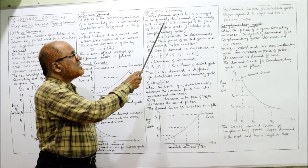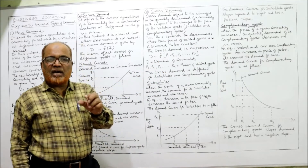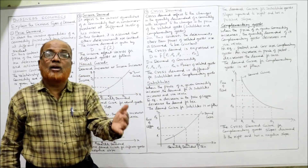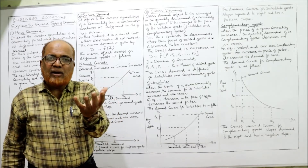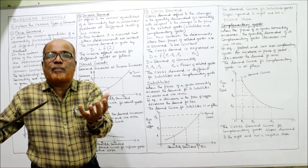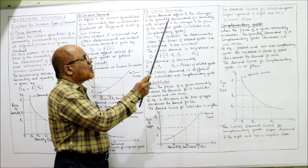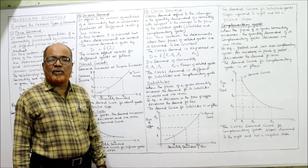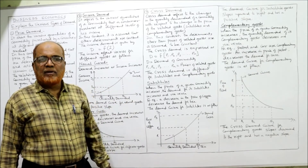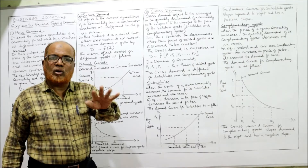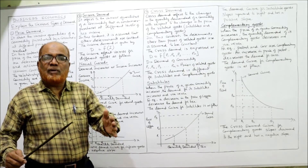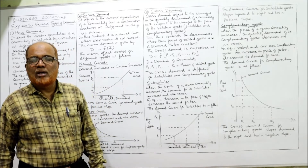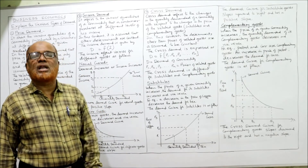Cross demand refers to the change in quantity demanded of a commodity with respect to the change in the price of related goods. The related goods may be substitutes or complementary goods. Substitutes are goods where people consume either A or B, not both. Complementary goods are those where people want both A and B simultaneously.